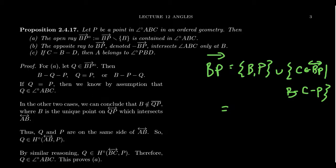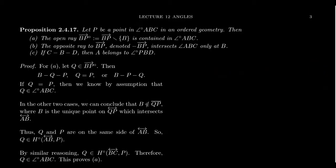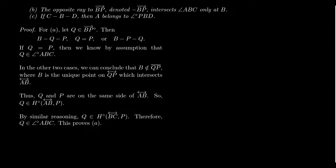The first condition we're going to prove is that the open ray BP is contained in the interior of the angle. So if you have an interior point to an angle, the open ray that emanates from the vertex of the angle to that interior point is entirely inside the interior of the angle.